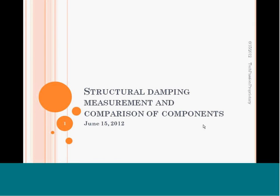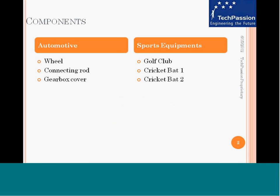The topic of this presentation is structural damping measurement and comparison for different components. Six different components were taken from two different industries: automotive and sports equipment. From automotive, we took a wheel, a connecting rod, and a gearbox casing. From sports equipment, we took a golf club and two cricket bats of different sizes and weights. The presentation covers a comparison of damping for these various components.